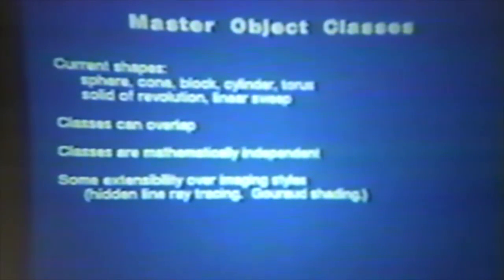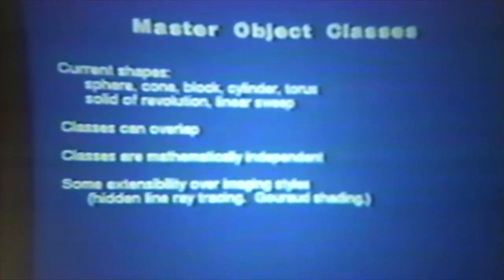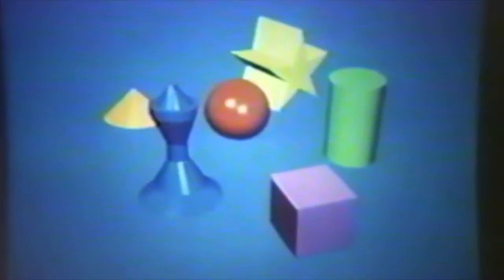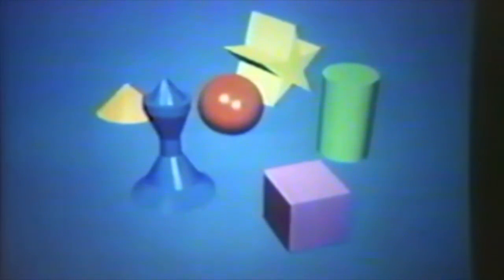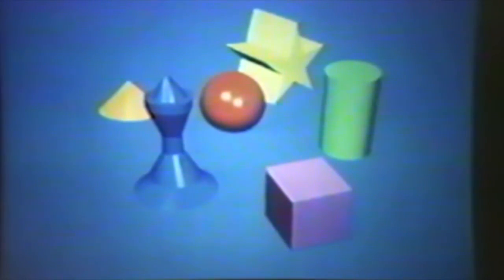I'll talk about the classes of shapes, or master object classes, that make the system extensible. These are the Solid Views primitives: the sphere, cone, block, cylinder, torus, solid of revolution, and the linear sweep — which is a polygon with depth, shown as the star in the back.